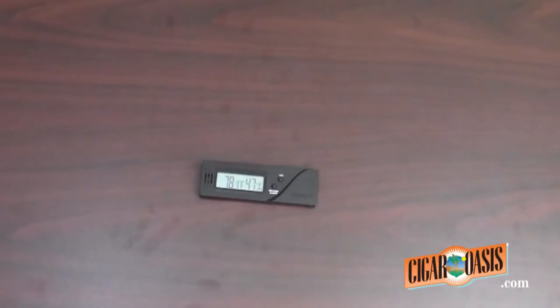So for example, if you know the accurate humidity level to be 73 but the unit is only reading 70, you want to raise it by 3 points.